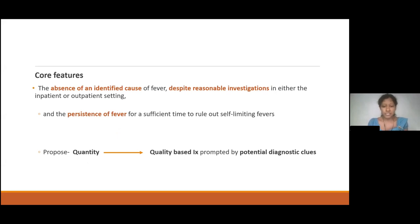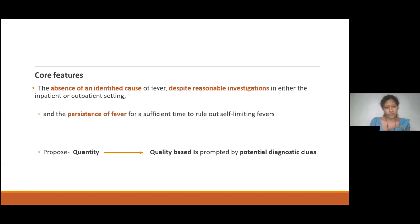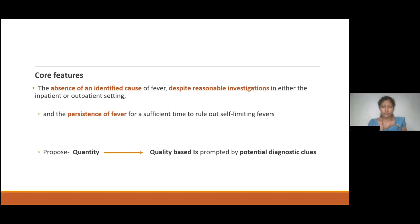There are problems with the definitions proposed so far. For example, with the 101 Fahrenheit threshold, patients with immunocompromisation may not produce that level of temperature. Apart from that, the duration timeframe for investigations will depend on the efficiency of the healthcare setting. We don't have universal consensus regarding the level of investigation needed before concluding PUO. What we need to keep in mind is two key features: persistent fever for sufficient time to rule out self-limiting fever, and absence of an identified cause despite reasonable investigations either inpatient or outpatient. The set of investigations is now moving from timeframe-quantity-based to quality-based investigations guided by potential diagnostic clues.